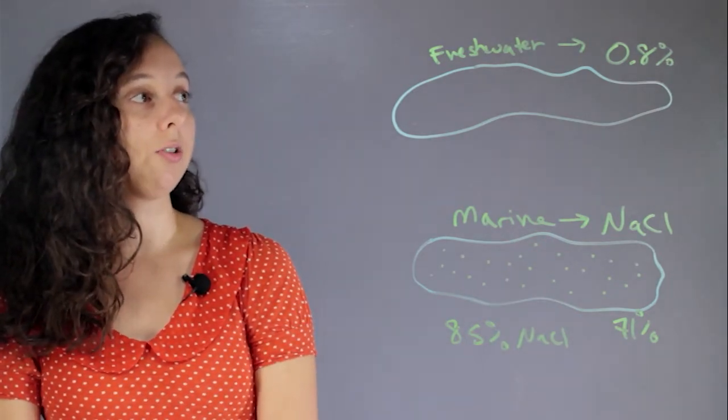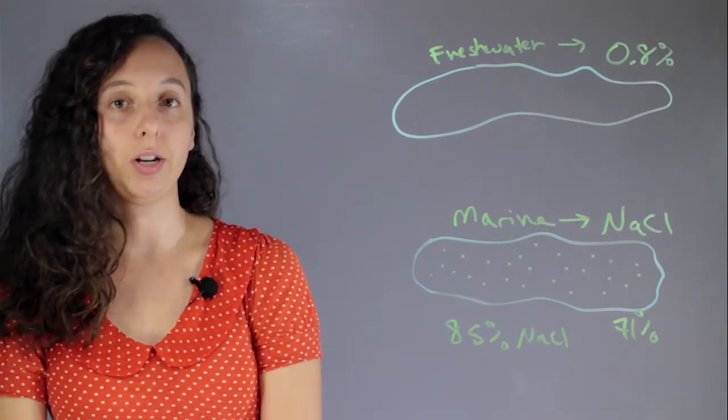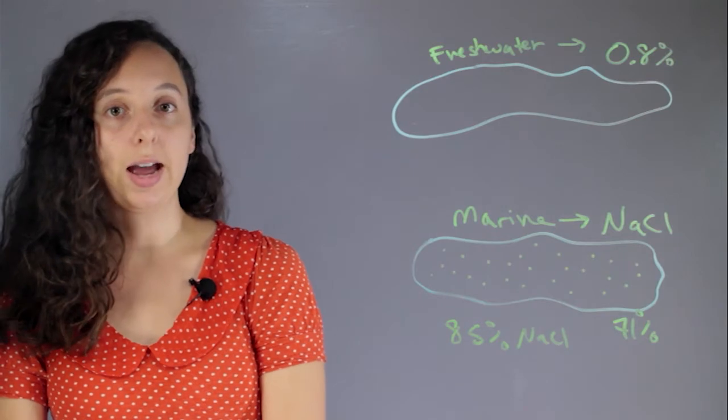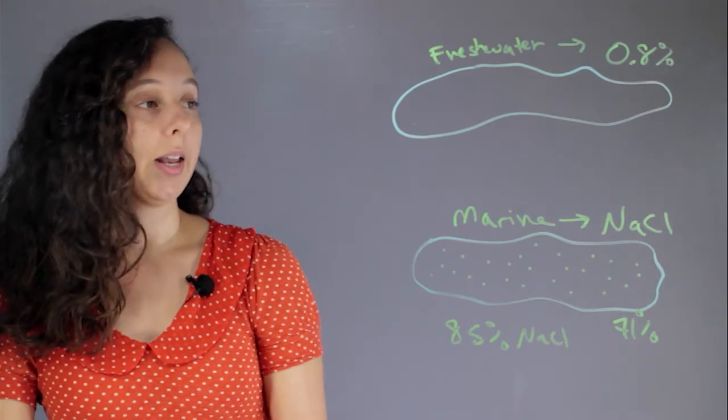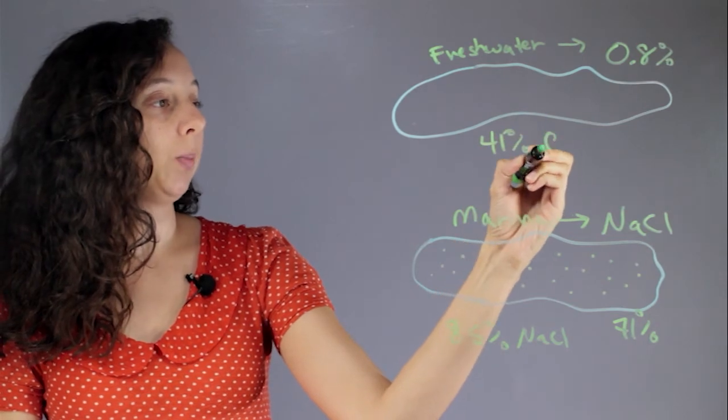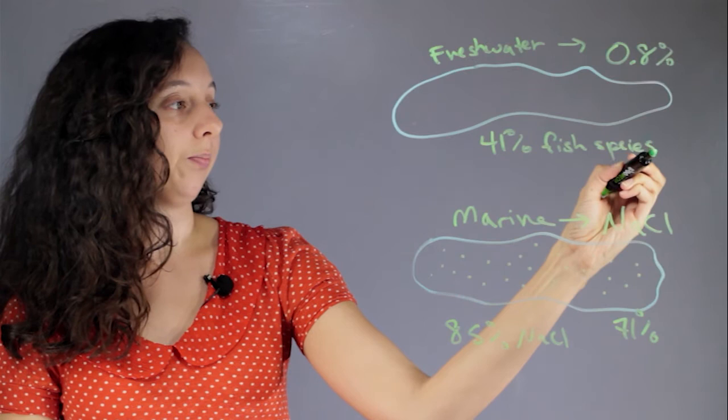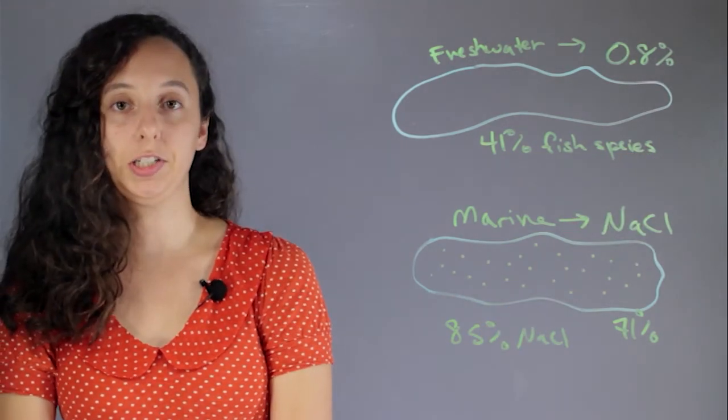And so, interesting fact, even though freshwater only contains 0.8% of the planet's surface, and even less of that in the total volume of water, it actually has 41% of fish species. So lots of fishes in lakes.